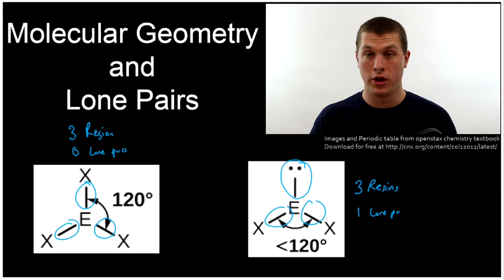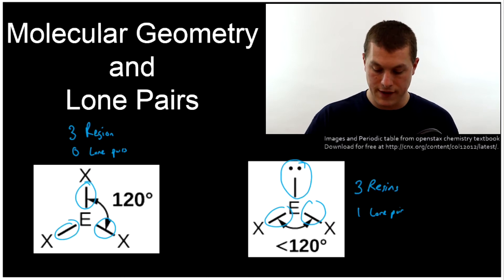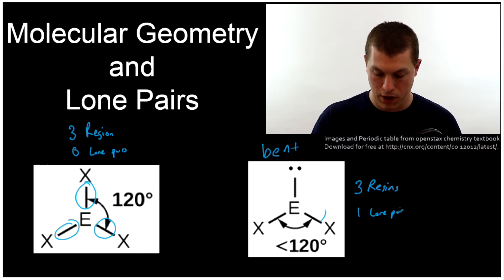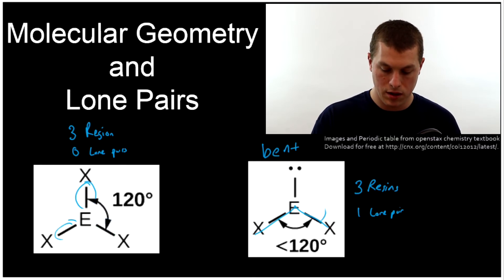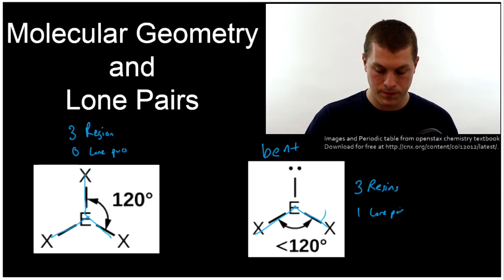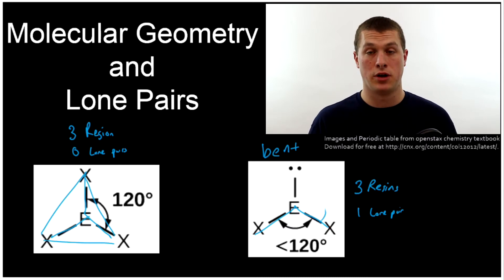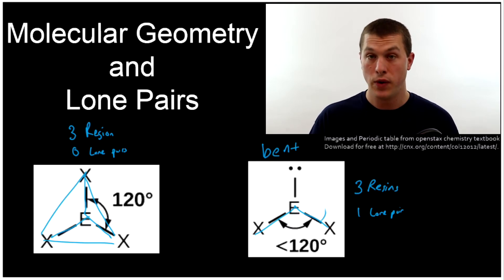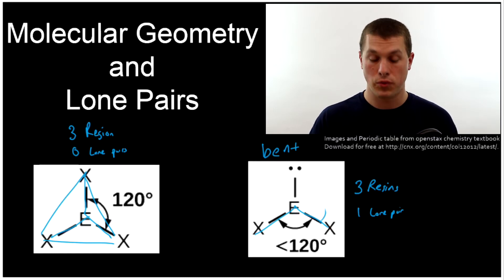That changes the way our molecule will appear. On the right we would call it bent — the molecular geometry is bent because it looks like a bent molecule. On the left we would call it trigonal planar. Notice these two molecules have the same electron geometry; both are trigonal planar in terms of electron geometry. But in terms of molecular geometry they're different: one is bent because it has two atoms around the central atom, and the other is trigonal planar because it has three atoms around the central atom.